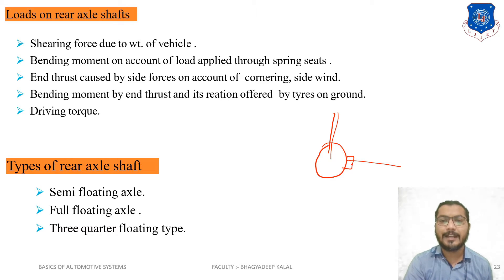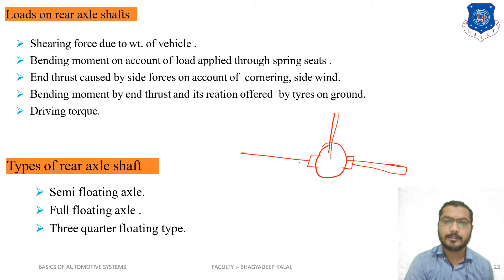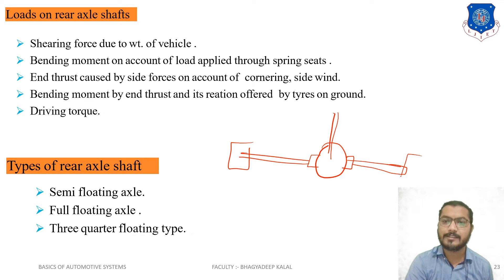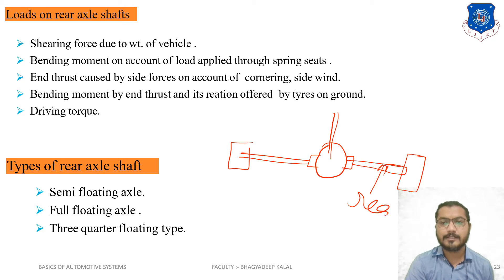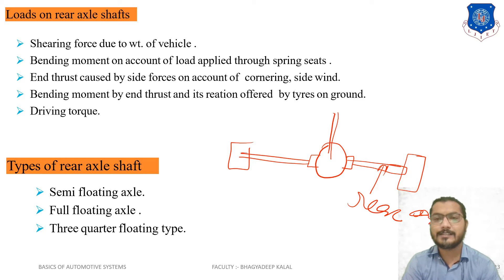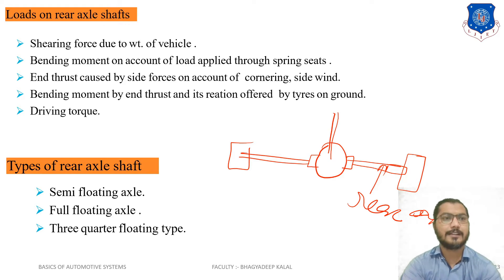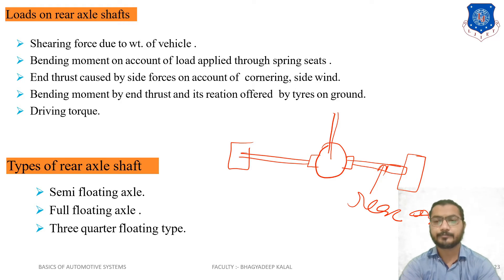The side gears are connected to the rear axles on both sides. On the rear axle, the wheel or wheel hub is mounted. Generally, rear axles are live soft axles, and different types of loads can be borne by these axles.